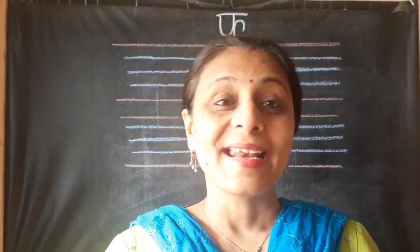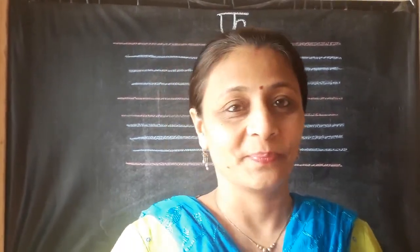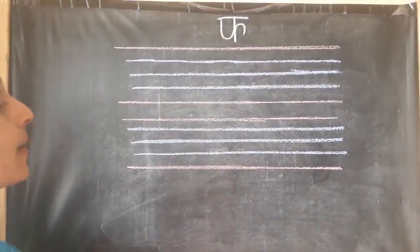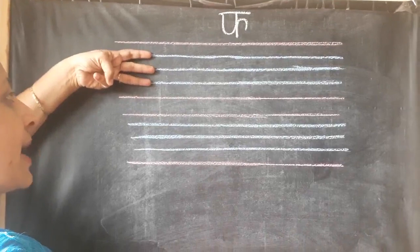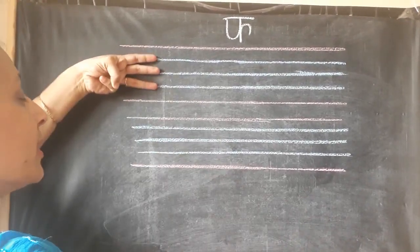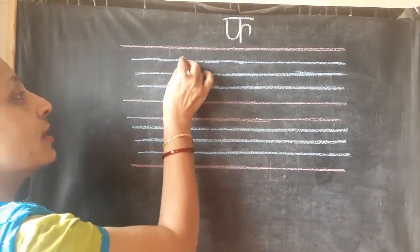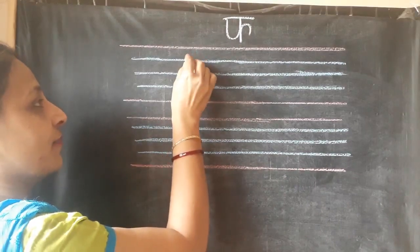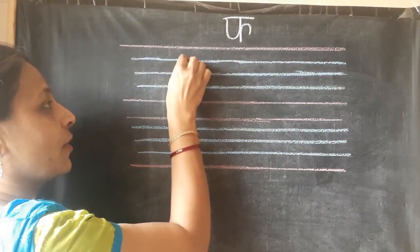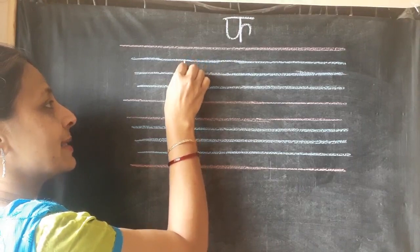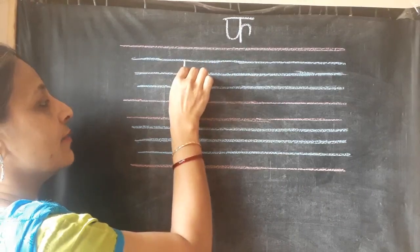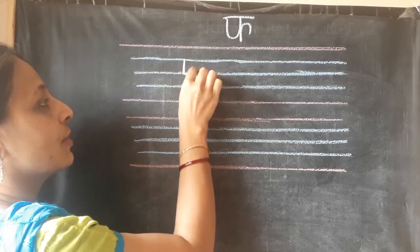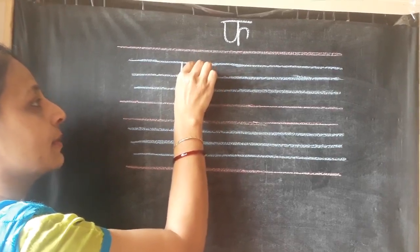Children, let's see how to write Vyanjan Fa on the board. Everyone please pay attention. We are going to write Vyanjan and all the Vyanjans in three blue lines. Let's start Vyanjan Fa. First of all, I will start from the first blue line — standing line. Now I will make a U and go up, come down.